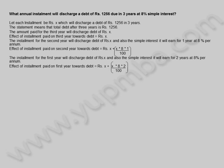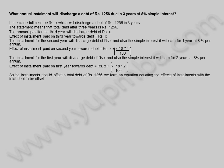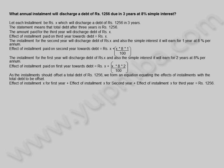The effect of the installment paid in the 1st year towards debt is equal to X plus (X × 8 × 2) / 100 rupees. As the installments should offset a total debt of 1,256 rupees, we form an equation equating the effects of installments with the total debt to be offset. The equation is: X plus (X × 8 × 2)/100 plus X plus (X × 8 × 1)/100 plus X equals 1,256 rupees.